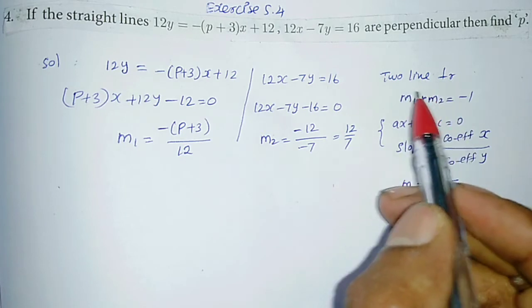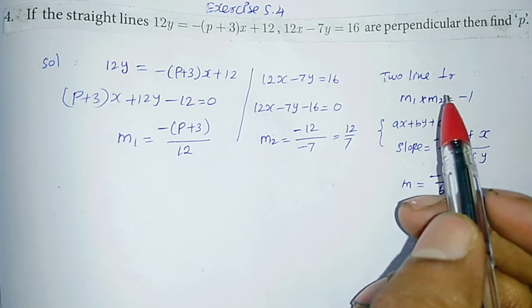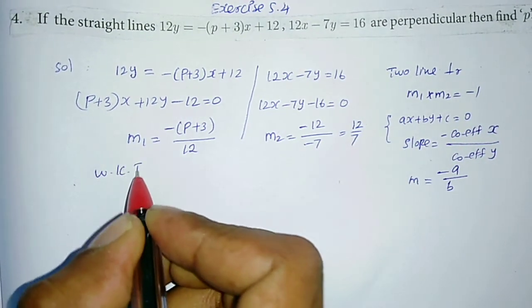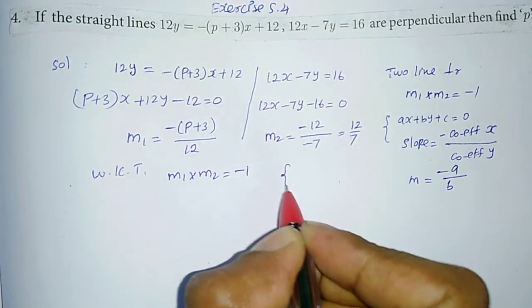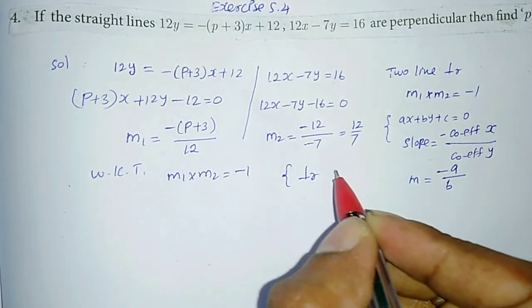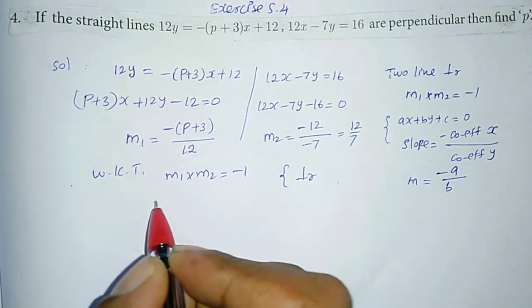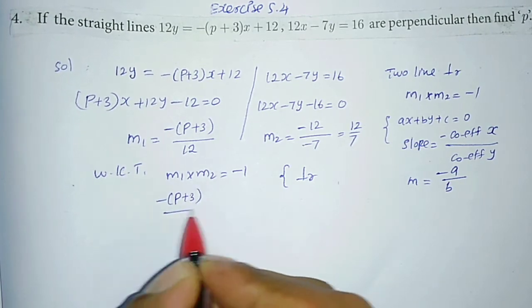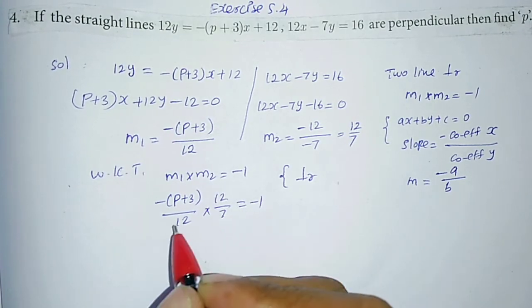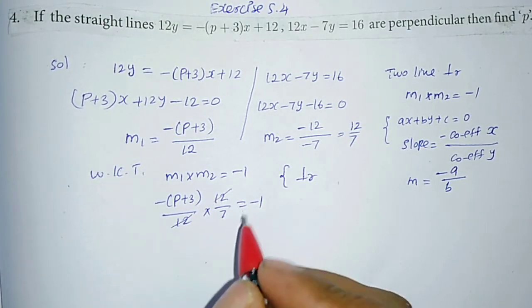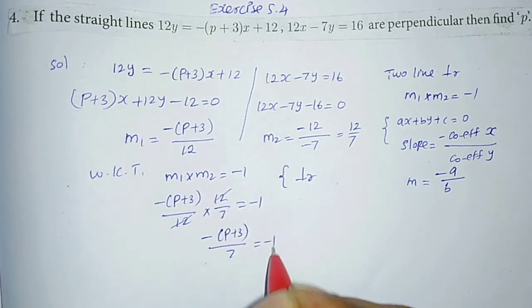Since two lines are perpendicular, the condition is M1 into M2 = minus 1. Substituting the values: minus of (p+3) divided by 12, into 12 divided by 7, equals minus 1. The 12 and 12 cancel. So minus (p+3) divided by 7 = minus 1.